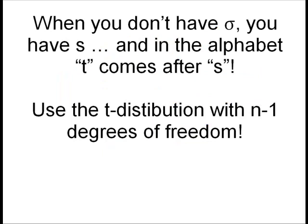Because when you don't have sigma, you'll have s, the standard deviation of the sample. And in the alphabet, last time I checked, t came after s. So, you remember that s and t right next to one another. When you don't have sigma, you're simply going to use the standard deviation of the sample, and then use the t distribution with degrees of freedom, simply calculated by n, sample size, minus one. Don't believe me? Let me show you.